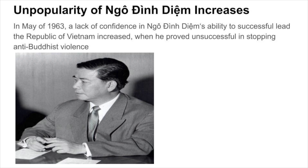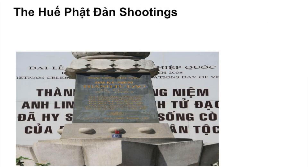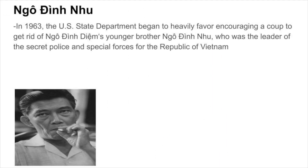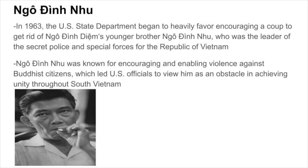In May of 1963, a lack of confidence in Diem's leadership increased when he proved unsuccessful in stopping anti-Buddhist violence. The Huey Phat Dan shootings of nine unarmed Buddhists led to massive protests over discrimination against Buddhist citizens. In 1963, the U.S. State Department began to heavily favor encouraging a coup to remove Diem's younger brother, Goh Dinh Nhu, leader of the secret police, who was known for enabling violence against Buddhist citizens and was viewed by U.S. officials as an obstacle to unity in South Vietnam.